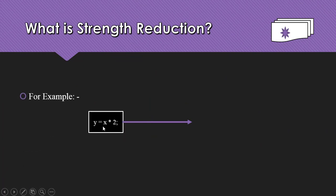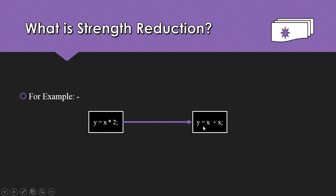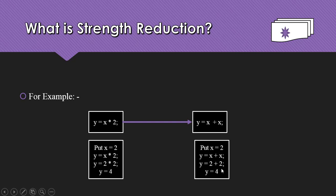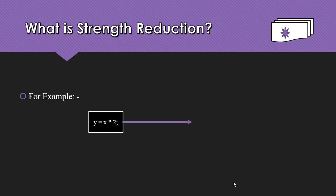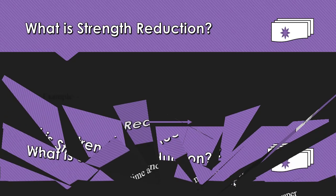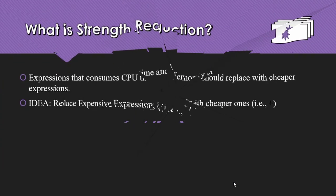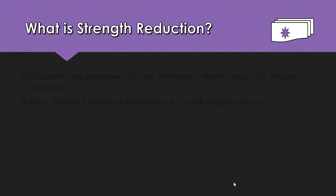In the strength reduction example, y = x * 2 can be replaced with y = x + x. When computed, the result is the same for both. These are the different methods used for loop optimization.